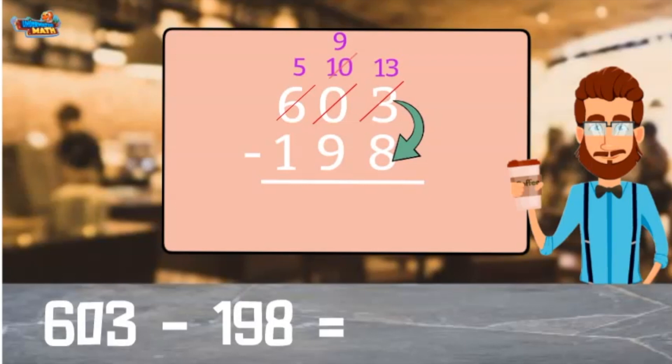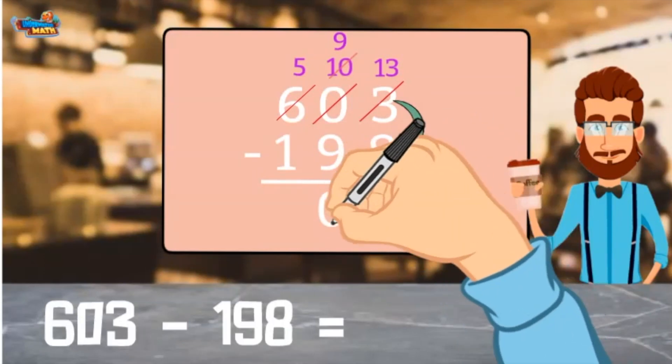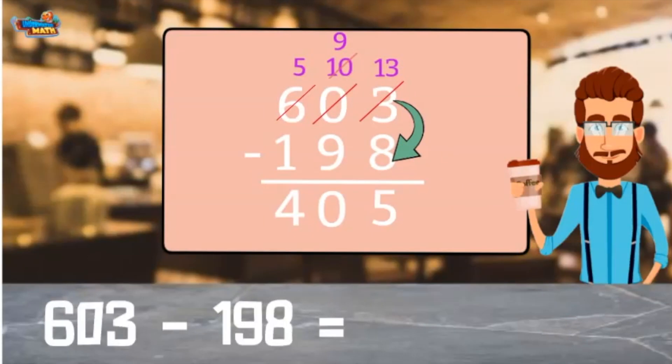Yes, that was a lot of work. But now we are ready to subtract. 13 minus 8 is 5. 9 minus 9 equals 0. And 5 minus 1 equals 4. 603 minus 198 equals 405.